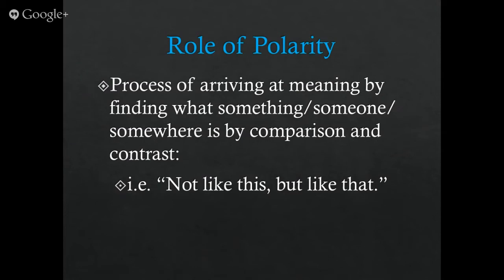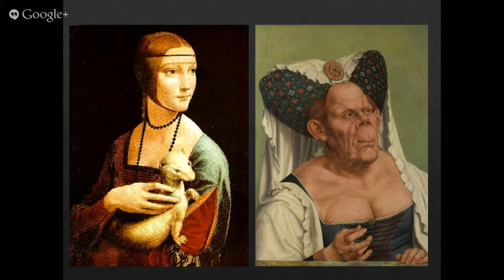The role of polarity — especially in literature — means that I understand something because I understand what it's being compared to. I know what's considered beautiful because I know what's considered ugly, and I know what's considered ugly because I know what's considered beautiful. If I showed you a picture, you would understand the ugly one because of the rules you have about what's considered beautiful.